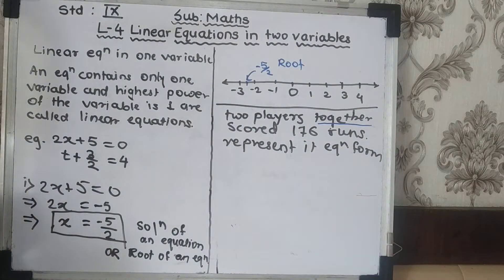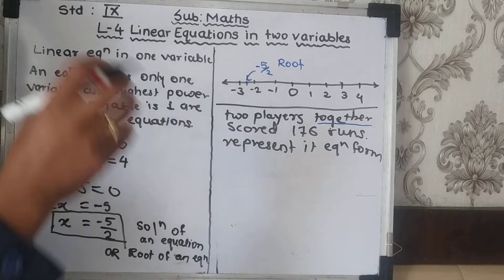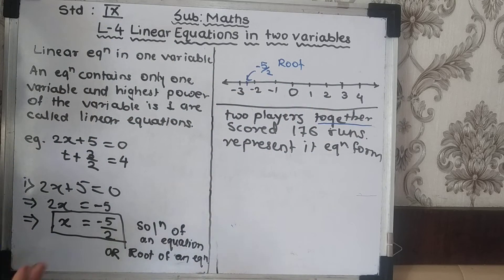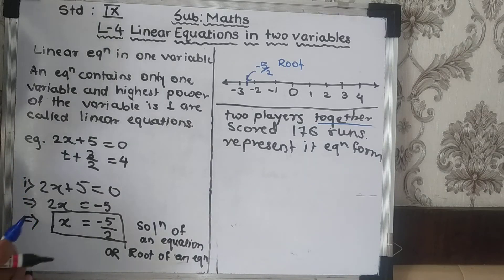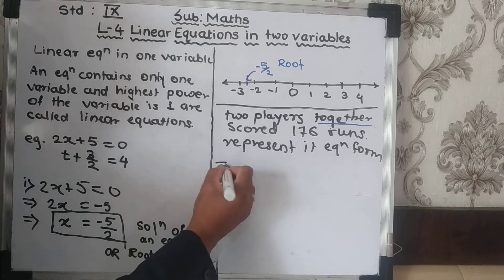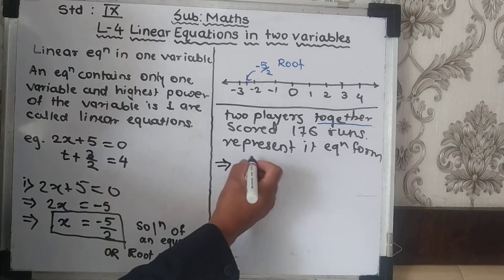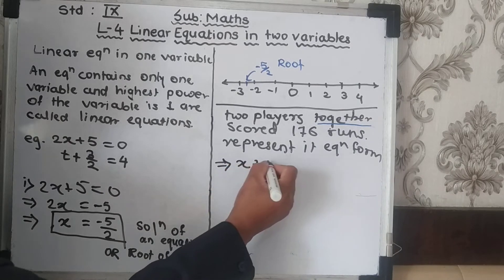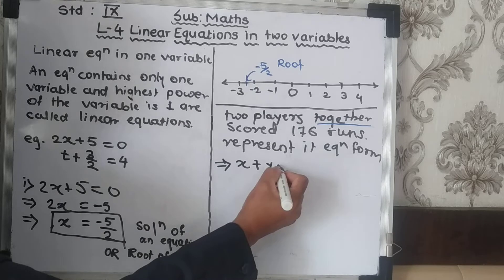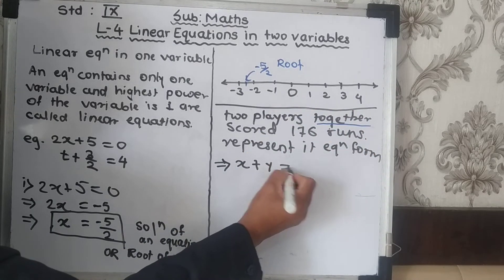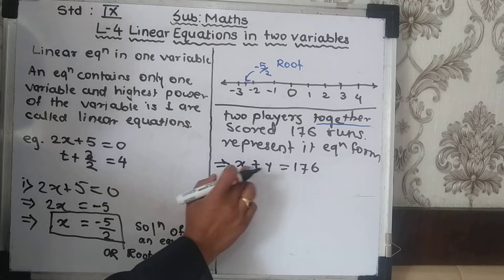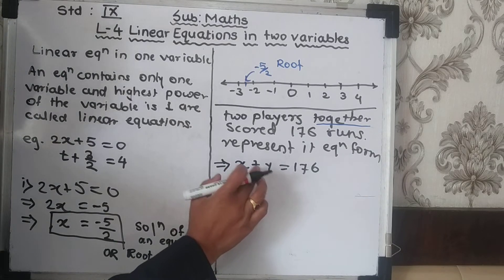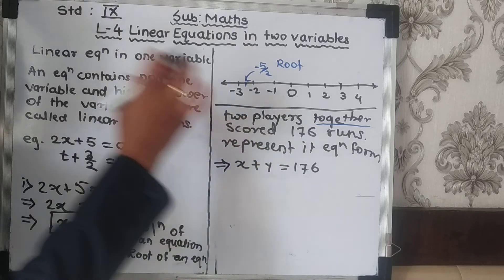We will add their scores: player 1's score plus player 2's score equals 176. Since we don't know either player's score, we take both as variables — x for one player and y for the other. So x + y = 176. These are two different variables, which is why this is a linear equation in 2 variables. Since both powers are 1, it is linear.